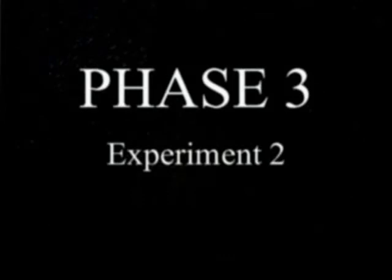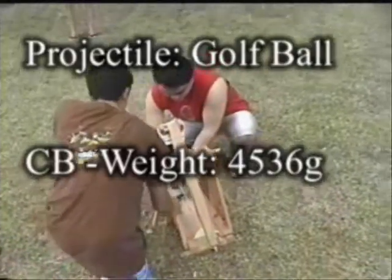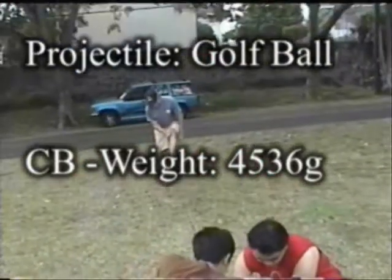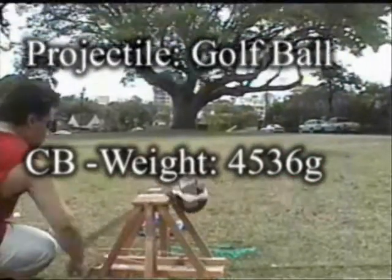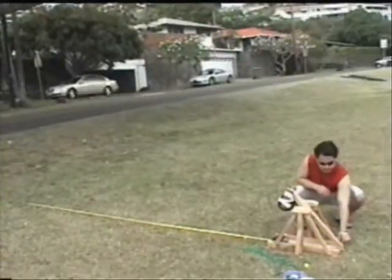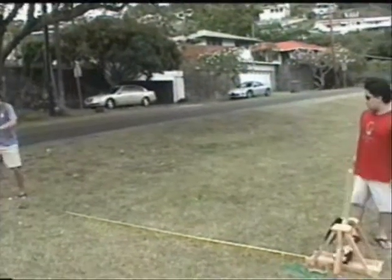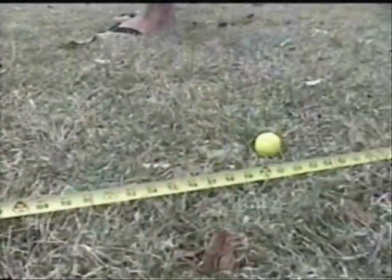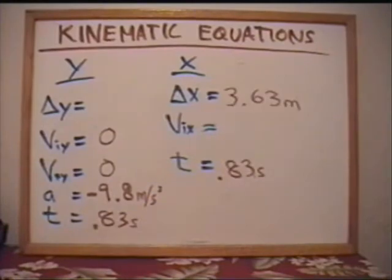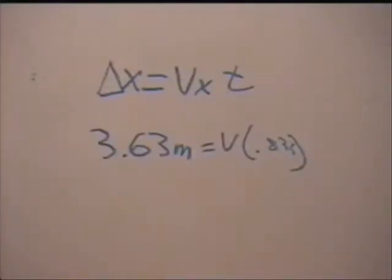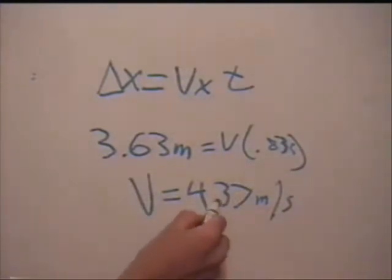Phase 3, Experiment 2, involves using two different projectiles. The first one will be the golf ball, and a counterbalance weight of 4536 grams. Ready, go. Here are the results. V equals 4.37 meters per second.